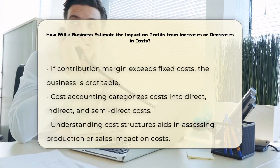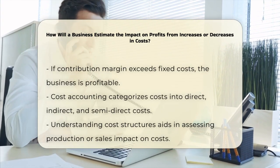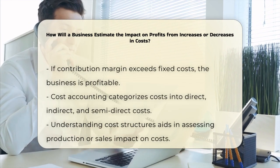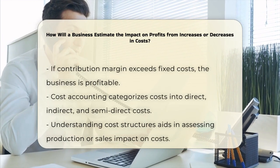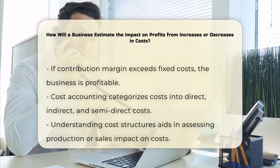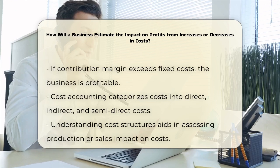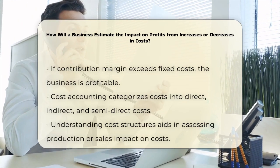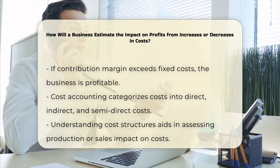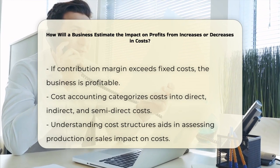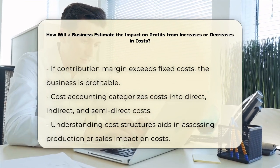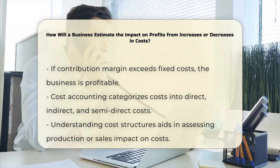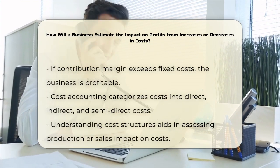Another important tool is cost accounting. This helps you categorize costs into direct, indirect, and semi-direct costs. By understanding these cost structures, you can see how increases in production or sales will impact your costs. For instance, using methods like standard costing, activity-based costing, or marginal costing, you can identify where costs are rising and make adjustments to maintain profit margins.